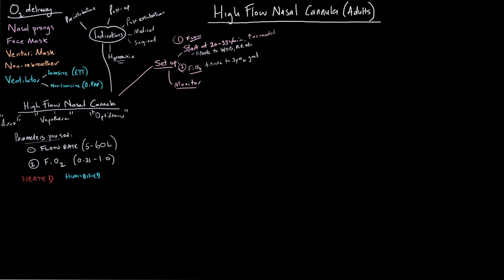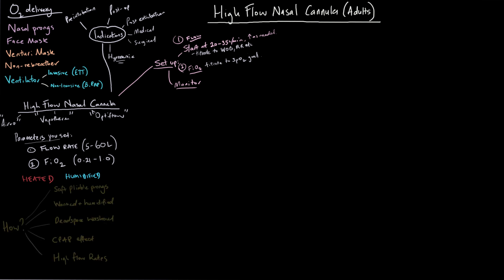As you increase flow rates up to 40, 45, or 50 liters per minute, you can often turn down the FiO2 because the higher flow allows patients to breathe more efficiently — that's anecdotal but something you'll observe. Regarding monitoring location: my opinion is that the sickness of the patient should dictate where they go — regular floor, IMCU, or ICU — not simply the fact that they're on high flow nasal oxygen. Use clinical judgment, but they do need to be monitored.